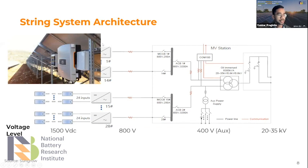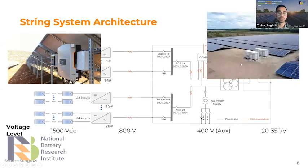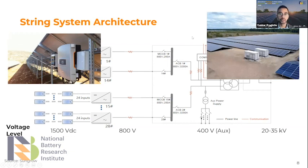This is an example of the string solution — string inverters are placed directly underneath the solar panel mounting systems and those different inverters are connected into one transformer.